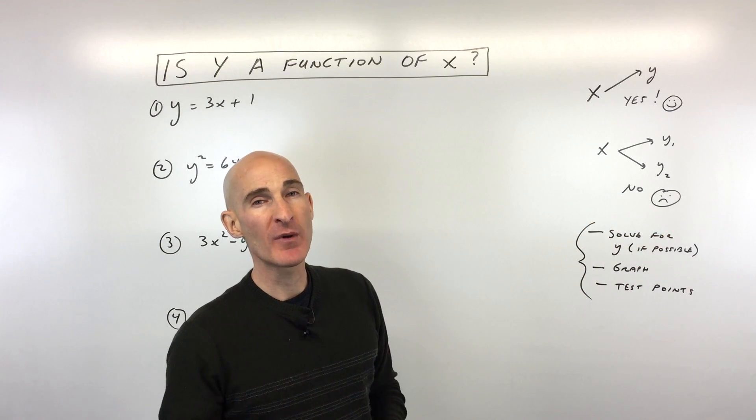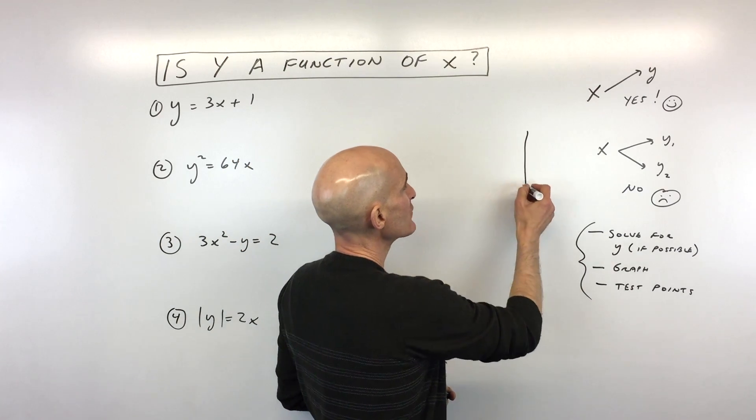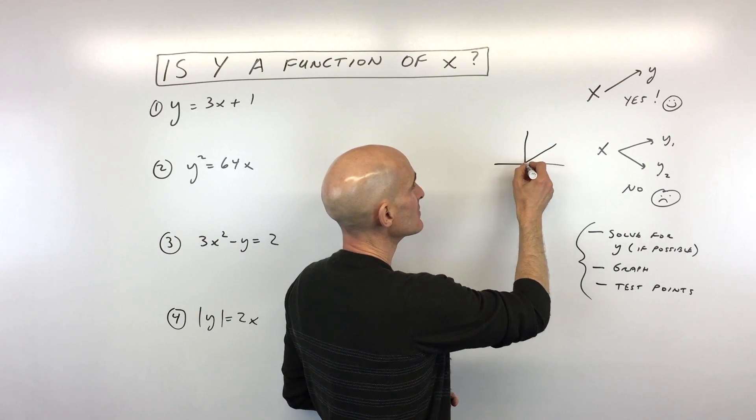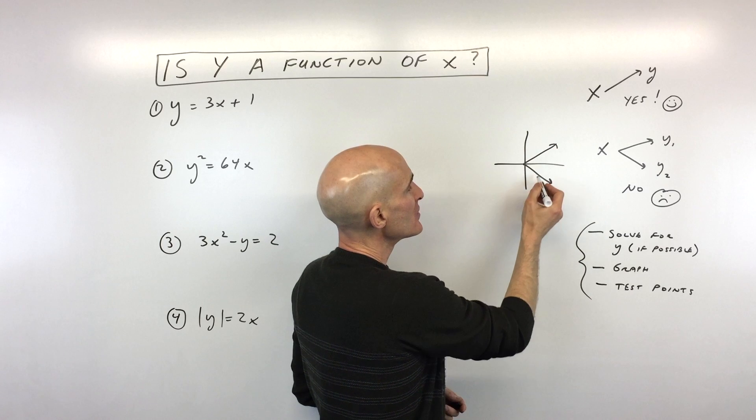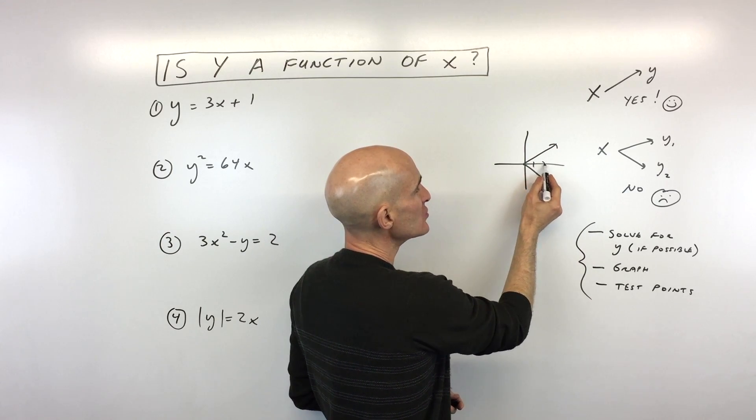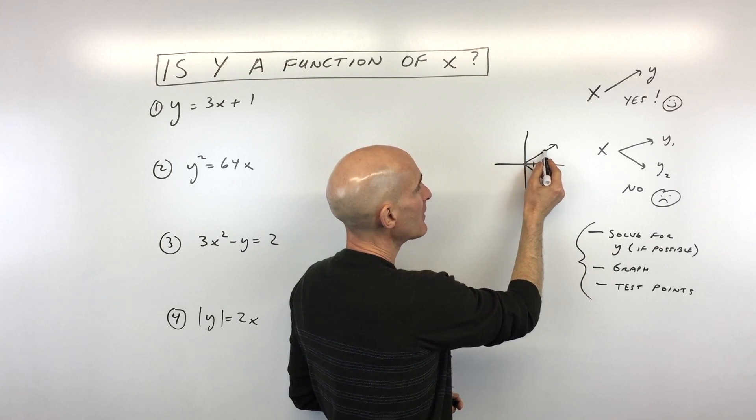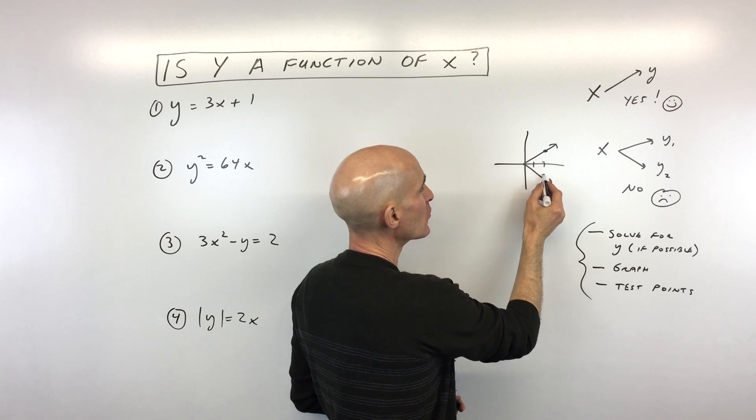Now, you might have learned this when you learned about the vertical line test. Say, for example, I have a graph that looks like this. Okay, you can see here if I go over to when x is 2 and I go up to the graph, I have a y value here as well as here.